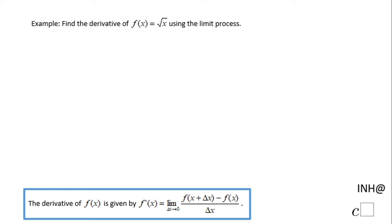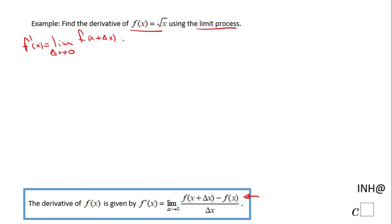Welcome, or welcome back, to C Squared. In this example we need to find the derivative of f(x) equals square root of x, and we're going to use the limit process. We're going to use this formula you see here: the derivative of a function can be found using this limit — limit as delta x approaches zero of f(x + delta x) minus f(x), over delta x.